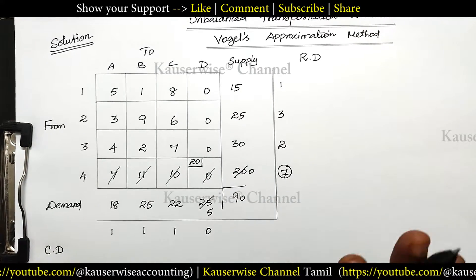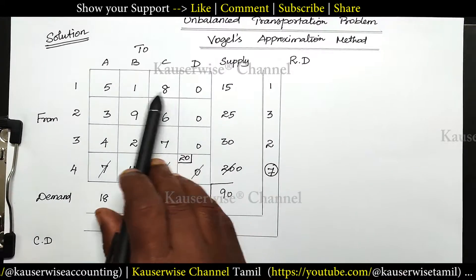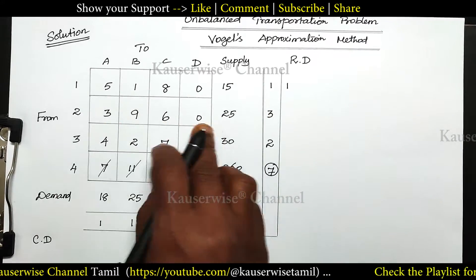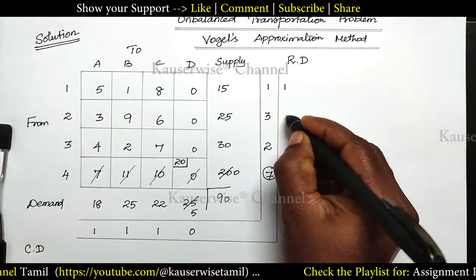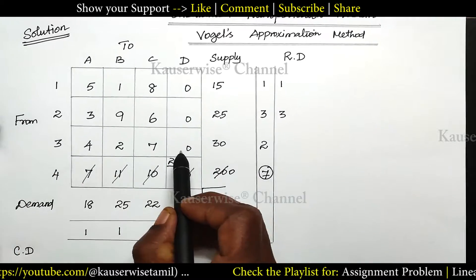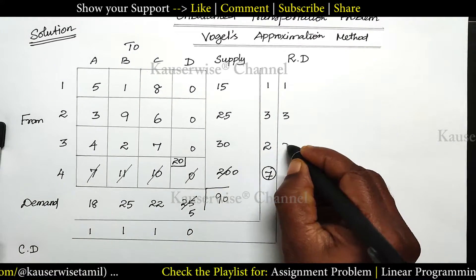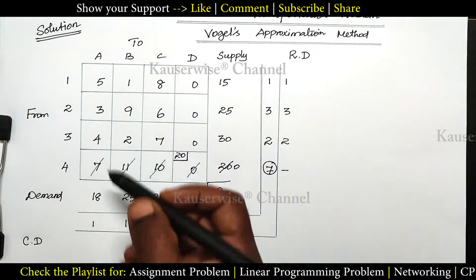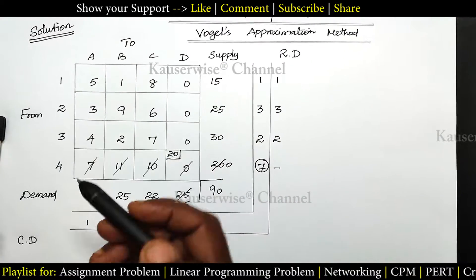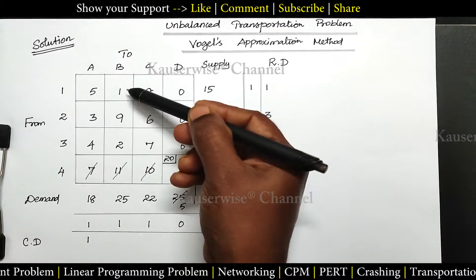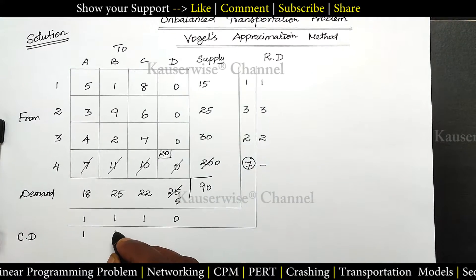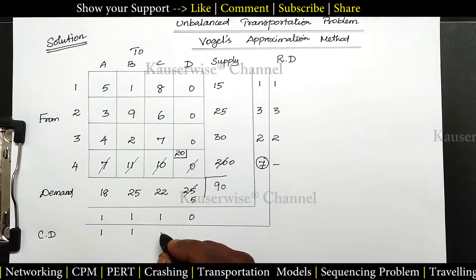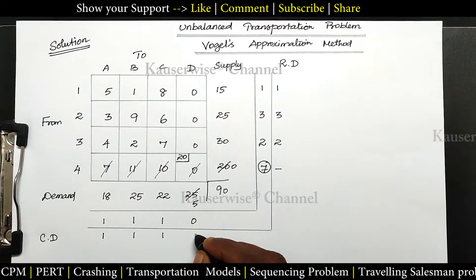Again we need to do the same procedure. First row: least value 0, next 1, difference 1. Second row: 0 and 3, difference 3. Third row: 0 and 2, difference 2. Last row: 0. For column difference: least value 3 and 4, difference 1. Second column: 1 and 2, difference 1. Third column: 6 and 7, difference 1. Last column: 0.